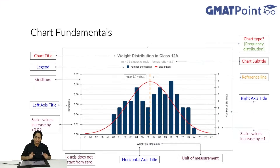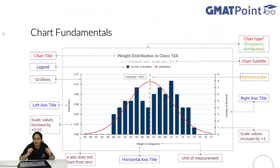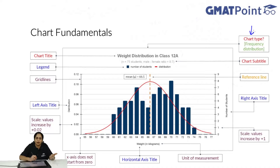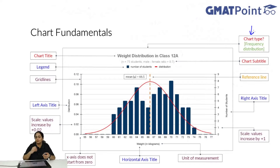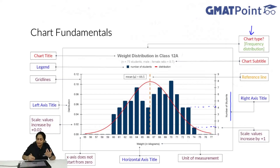Let's get started. Let's first look at a chart - what it actually looks like. In front of us is an example chart which shows the weight distribution in class 12. The first element is chart type. There are different types of charts: line charts, bar charts, pie charts, scatter plots. In this given chart, this is a frequency distribution - we are given the frequency at which a particular weight occurs. On the right axis, we are given the number of students which have a particular weight.